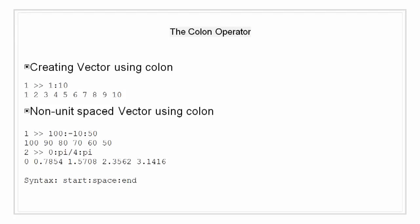Similarly, we can use colon to create non-unit spaced vectors like 100:-10:50. This will create a vector from 100 to 50 with a gap of 10: 100, 90, 80, 70, 60, and 50. Another example is 0:pi/4:pi, which creates a vector from 0 to pi with the decimation of pi/4, giving us 0, 0.7854, 1.5708, 2.3562, and 3.1416. The syntax for this is start:space:end, where space denotes the space between two consecutive elements.